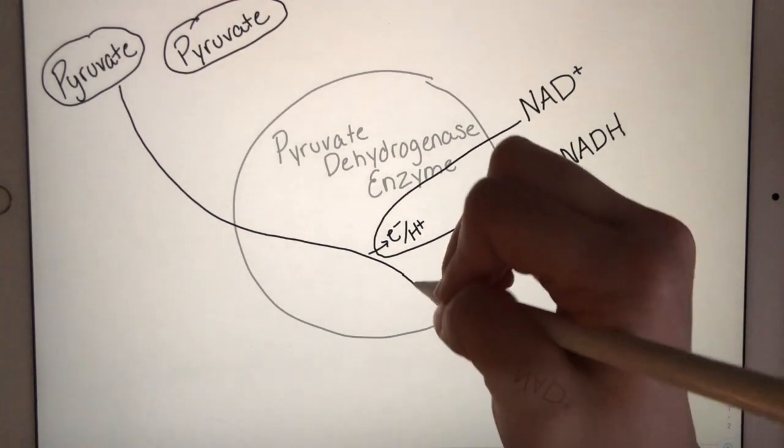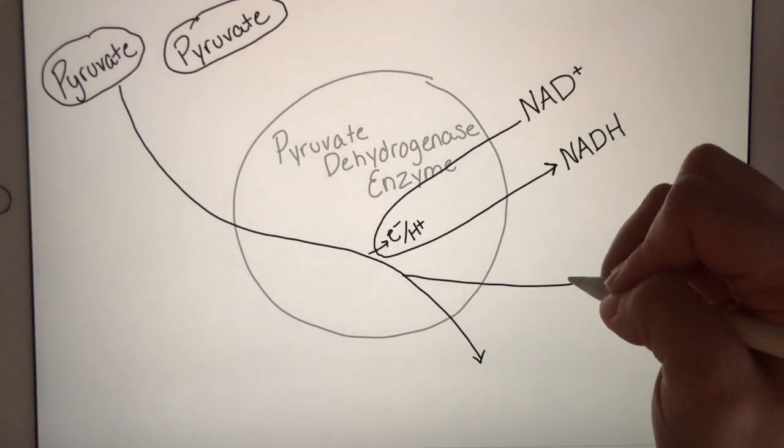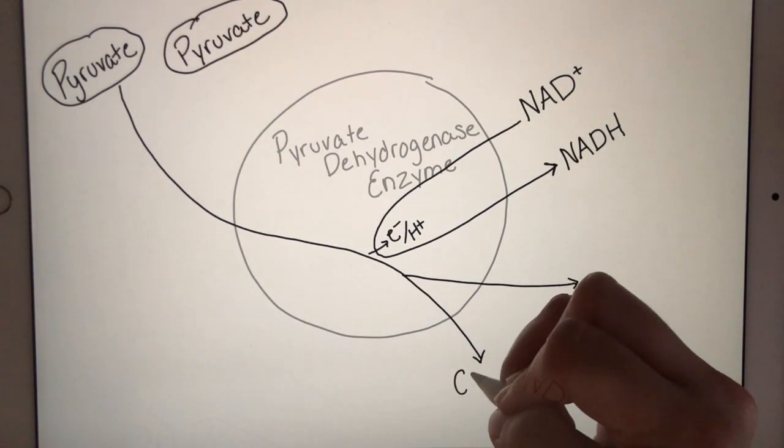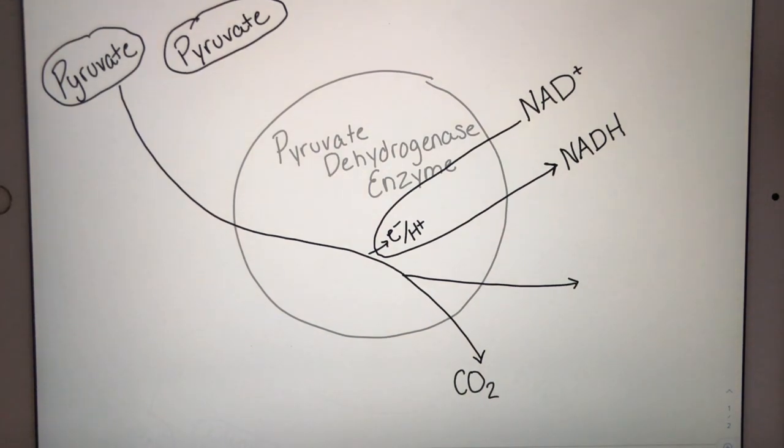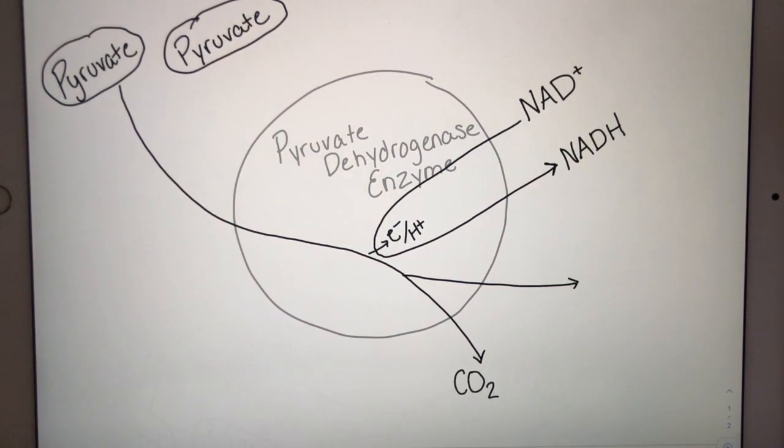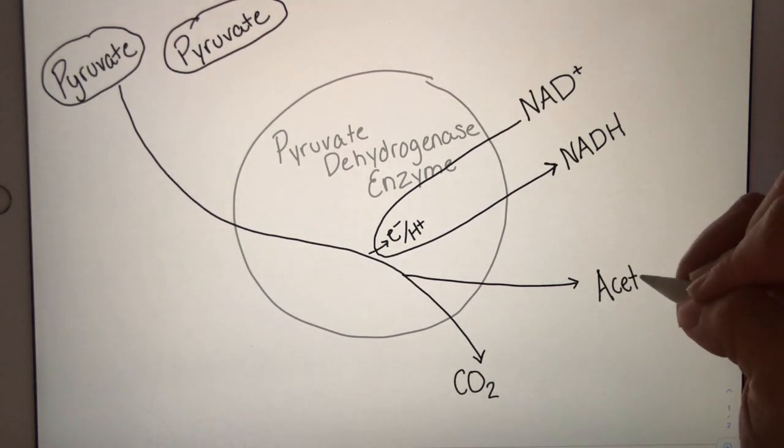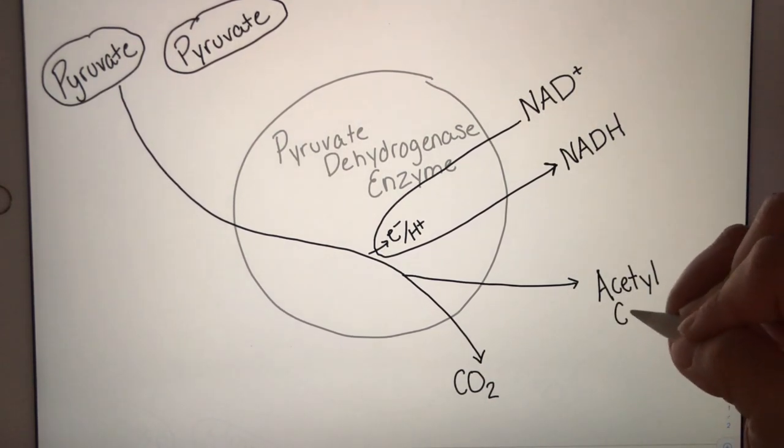After the pyruvate is processed, we have two outputs from the enzyme. The first is carbon dioxide, a waste gas of cellular respiration. And the second is a molecule called acetyl-CoA. CoA means coenzyme A.